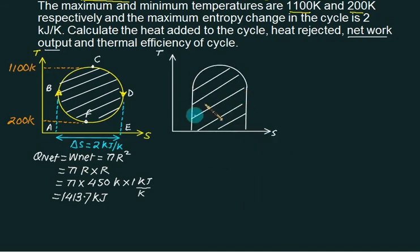So area under this diagram represents the heat. This one is A, this one is B. Now as far as the area is concerned, this is a standard area of lower rectangle plus one semicircle. What is the base of the rectangle? Equals to 2 kilojoules per kelvin. What is the height of rectangle at this point? This one is 200, this one is 1100. So the difference is 450 has to be added to 200.